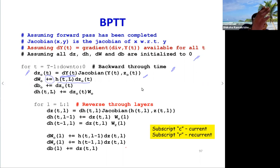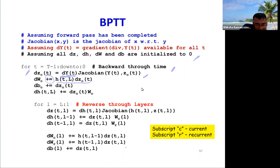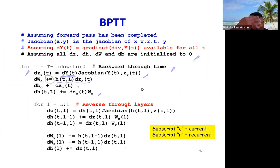Because the weights are the same in every column, at every time step you increment. Same thing with the bias. Then you can go back and get the derivative with respect to the output of the final hidden layer.